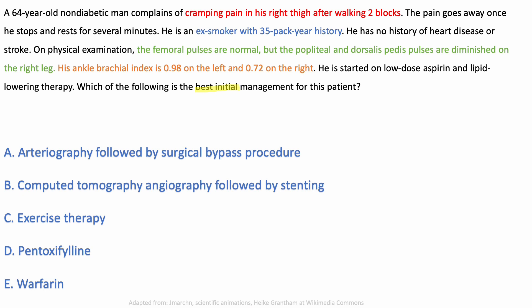Now let's read the answer choices: arteriography followed by surgical bypass, CT angiography then stenting, exercise therapy, pentoxifylline, or warfarin. All of these are options for peripheral arterial disease, so we already know the diagnosis based on the answer choices — that's the value of reading them first.